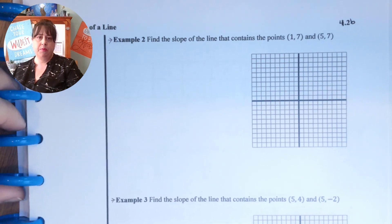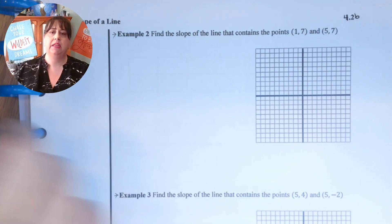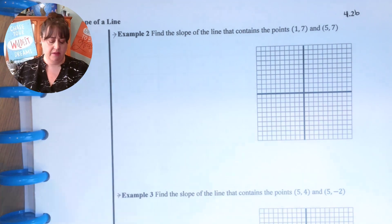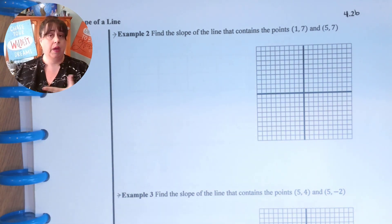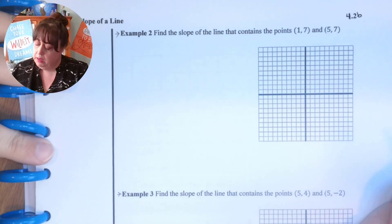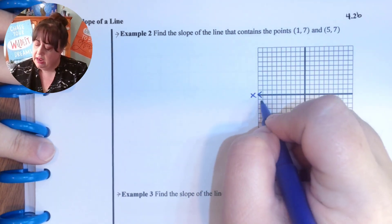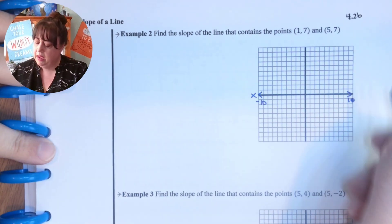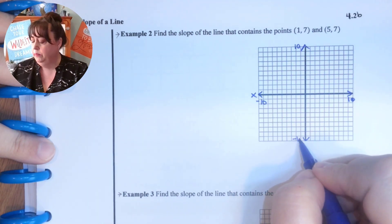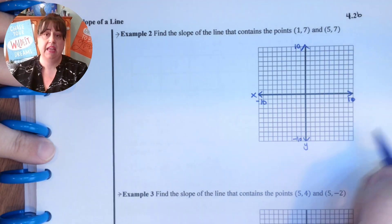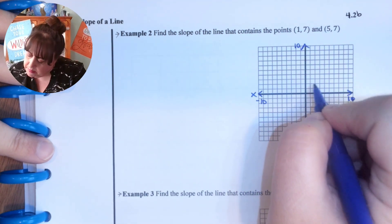There are two examples that we want to go over. We want to find the slope of the line that contains the points (1,7) and (5,7), and we're going to go ahead and graph it. Make sure you have your x and your y axes with scales. So over 1 and up 7.